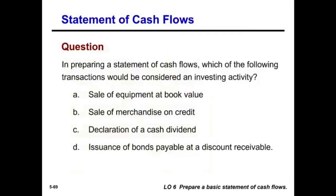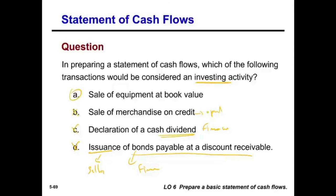Practice question: Which transaction is an investing activity? Issuance of bonds at a discount — that's financing. Declaration of cash dividend — financing. Sale of merchandise on credit — operating. By elimination, sale of equipment at book value is an investing activity.